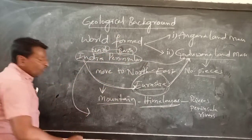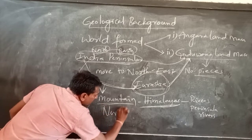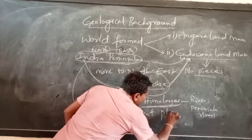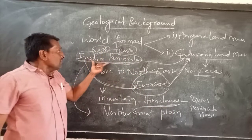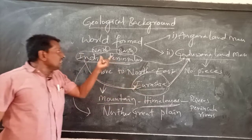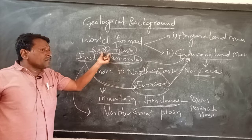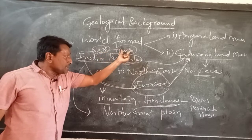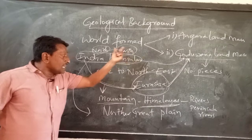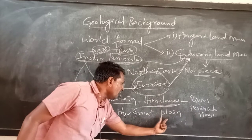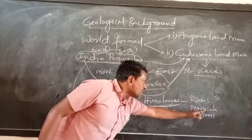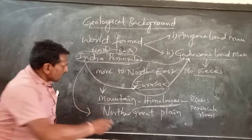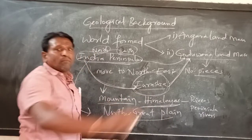This basin formed what is known as the Great Plains. When the Indian peninsula touched Eurasia, the north part was damaged and formed the basin. This basin was filled with soft material from the Himalayan rivers and the peninsula rivers, and it formed the Great Plains.